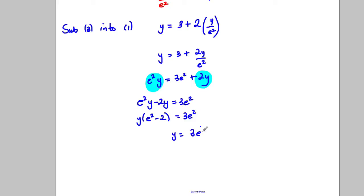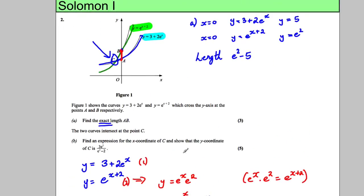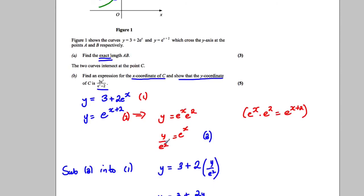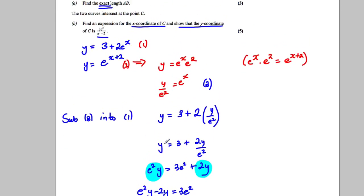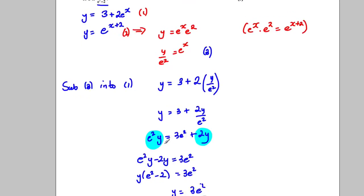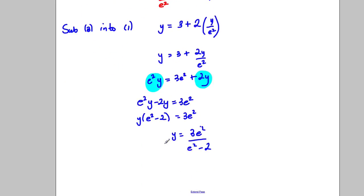And y is equal to 3e^2 over (e^2 - 2) and that is what I was asked to show - show that the y ordinate is equal to that. It did ask for an expression for the x ordinate. So maybe what I should have done actually, I jumped a little bit ahead here. I did something a tiny bit silly here.